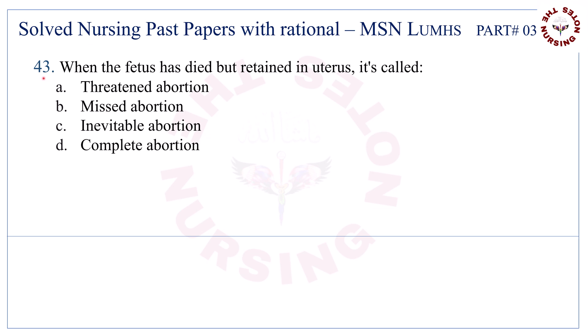Question number 43. When the fetus has died but is retained in the uterus, it is called — the correct answer is B — missed abortion. These are the main abortion types.